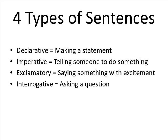Today we're going to talk about four different types of sentences that we use on a daily basis. A declarative sentence is a sentence that we use when making a statement. We generally use a period at the end of a declarative sentence.